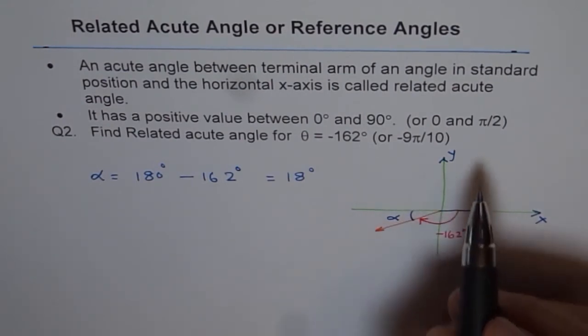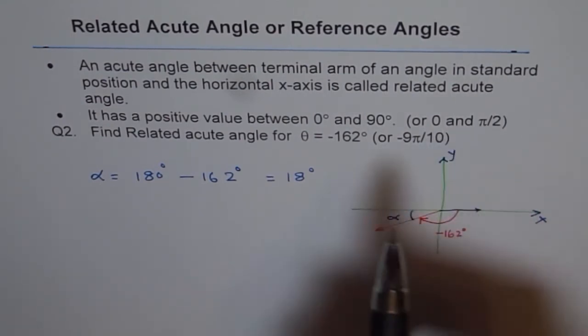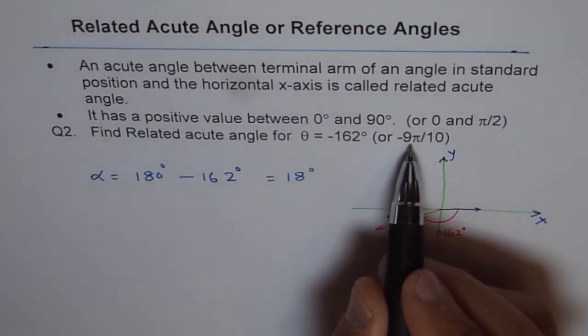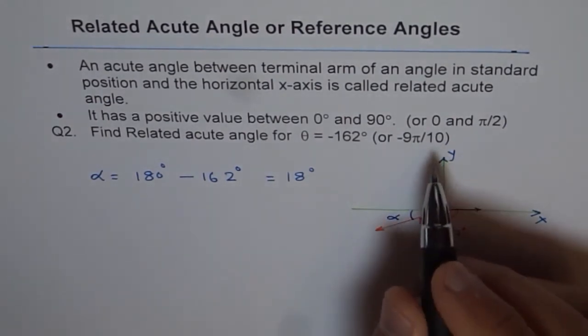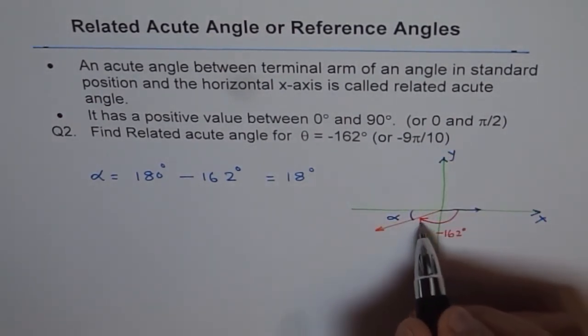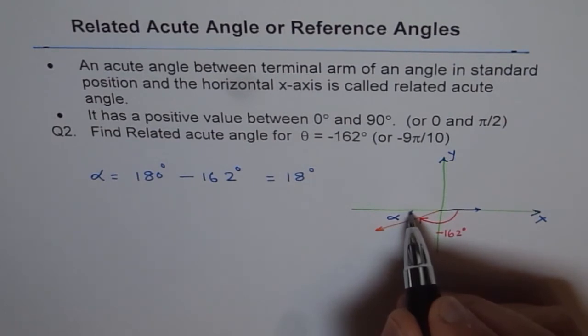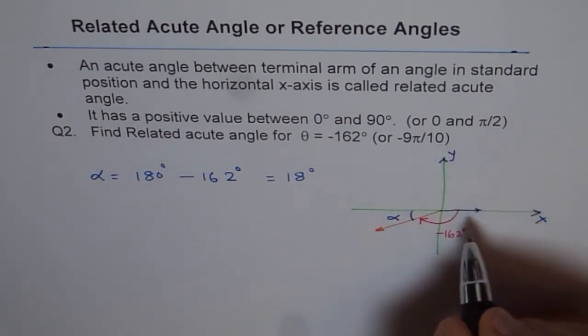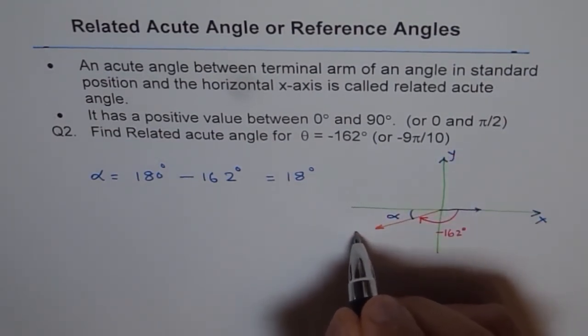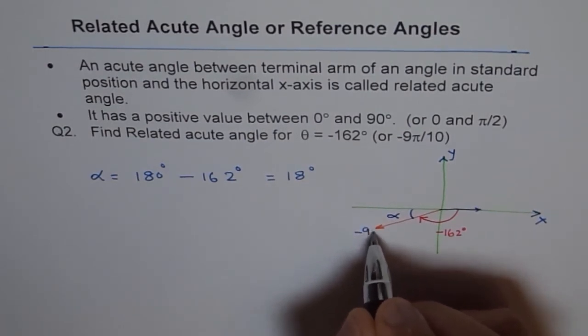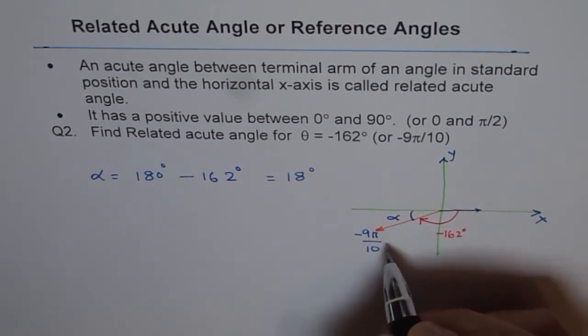Now those of you who are doing in radians, for them -9π/10. So that means this π is divided into 10 parts. Minus 9 means you have already covered 9. So this -9π/10 will mean from here to here you have covered 9 parts out of 10.